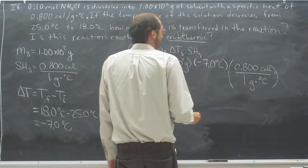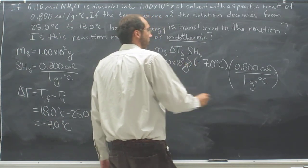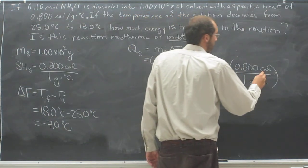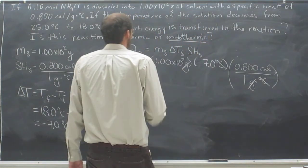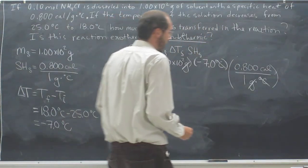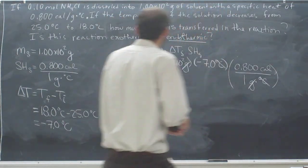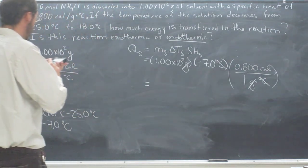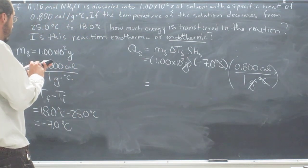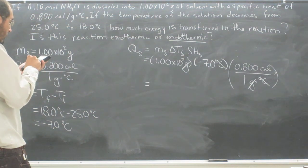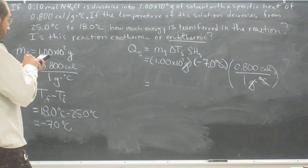Now we can cancel out grams and grams, degrees Celsius and degrees Celsius. We're left with calories. When we do that, 1.00 times 10 squared times negative 7 times 0.8.